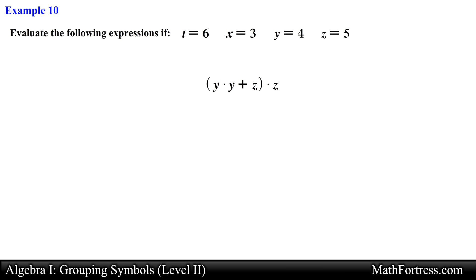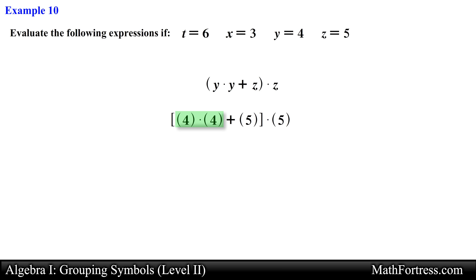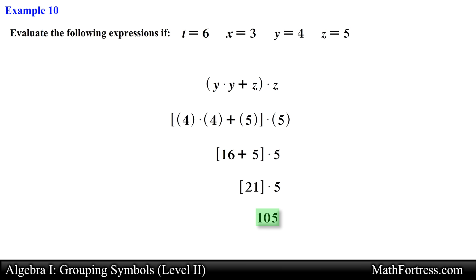The expression y times [y times y plus z] times z. We substitute each variable with its appropriate value: y equals 4 and z equals 5. We pay close attention to the bracket grouping symbol. Focusing within the bracket, we first take care of 4 times 4 which reduces to 16, then add 5 to get 21. Finally we take 21 and multiply it by 5 which simplifies to 105.